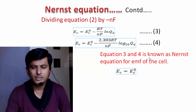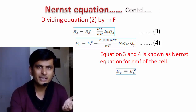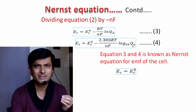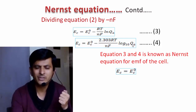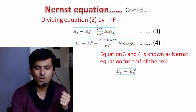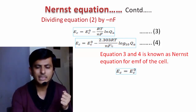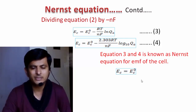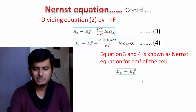In Equation 4, QA represents the ratio of activities of products divided by activities of reactants. If all reacting species are in their standard state of unit activity, then the log term becomes zero and EC equals E⁰C. That means under the condition of standard activities, the cell potential becomes equal to the standard potential of the cell.